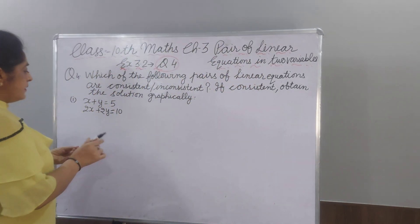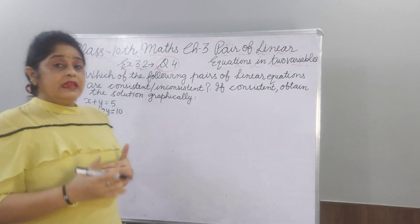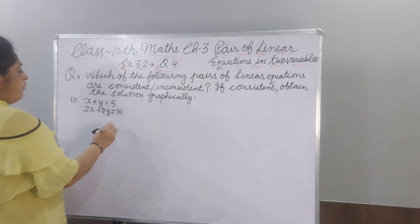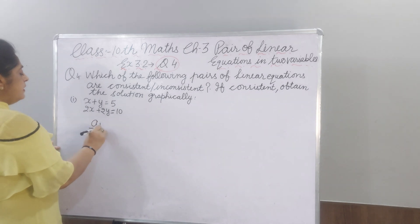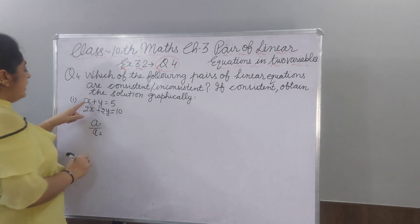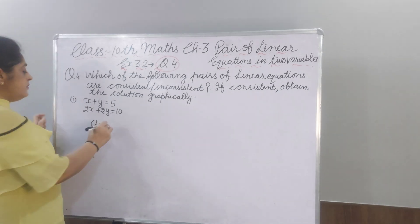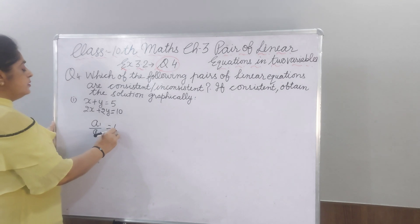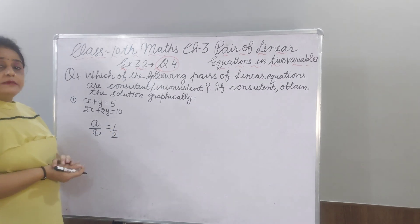First of all, we will compare a1, a2, b1, b2 and c1, c2. What is our a1 by a2? X coefficient is nothing, means 1 and here second equation, X coefficient is 2. a1 by a2 is 1 by 2.